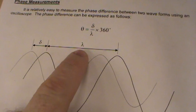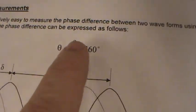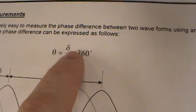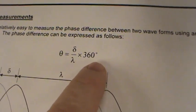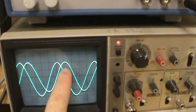So you have this measured in divisions and that measured in divisions. Then you take the lowercase Greek letter delta divided by lambda the wavelength and multiply that by 360, and you have the phase difference between the two waveforms.